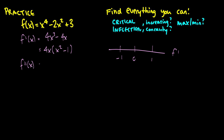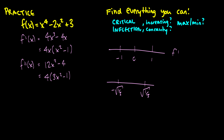The second derivative is 12x squared minus 4. Factoring out 4 gives 4(3x squared minus 1). Setting 3x squared minus 1 equal to zero: x squared equals 1/3, so x equals plus or minus the square root of 1/3. These are our inflection points, and we already found the critical points on the first line.